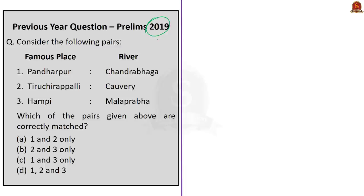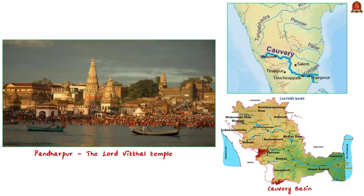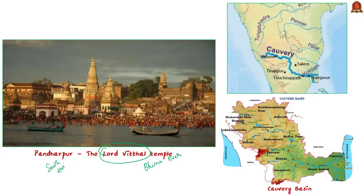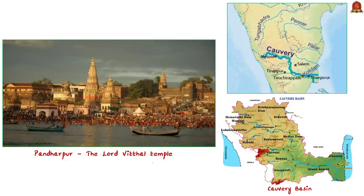The first pair is correctly matched. Pandharpur is famous for the Lord Vithal Temple situated on the bank of the Bhima River. The Bhima River is also called Chandrabhaga because the river looks like the moon. Pandharpur is a major holy place in Maharashtra, also called the South Kashi of Maharashtra. The second pair is also correct — Tiruchirapalli district is located along the Kaveri River in Tamil Nadu.